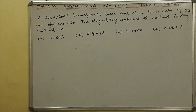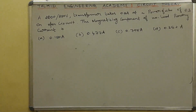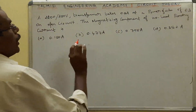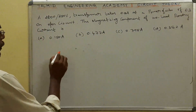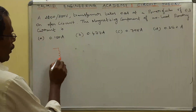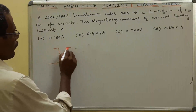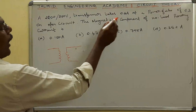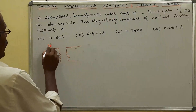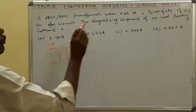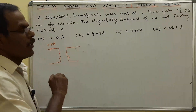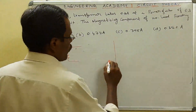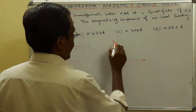A 2200 V, 50 Hz transformer takes 0.5 A at a power factor of 0.3. This is the open circuit condition — that is, no-load. Find the magnetizing component of the no-load primary current. The open circuit phasor diagram is called the no-load diagram.